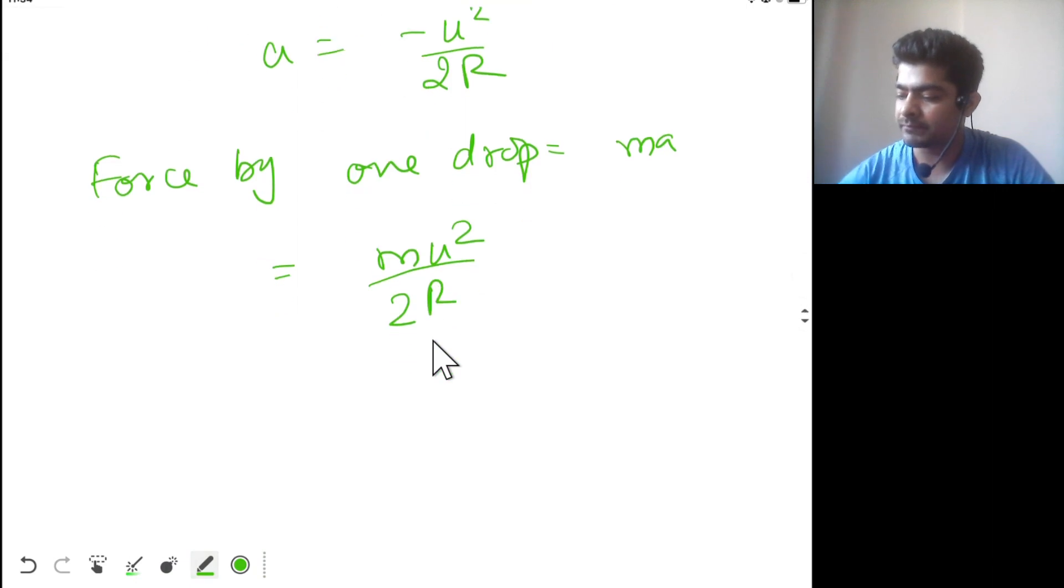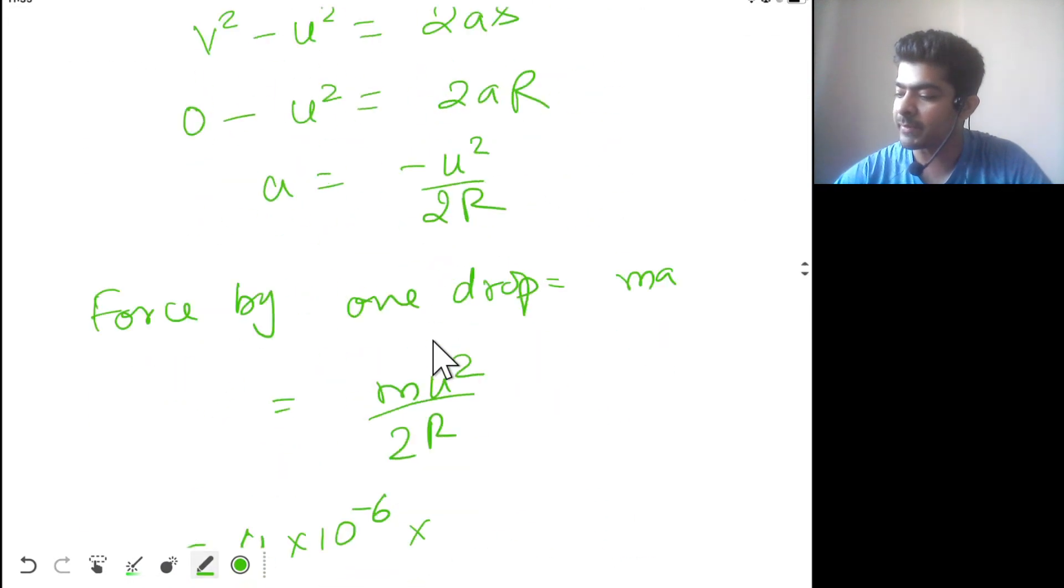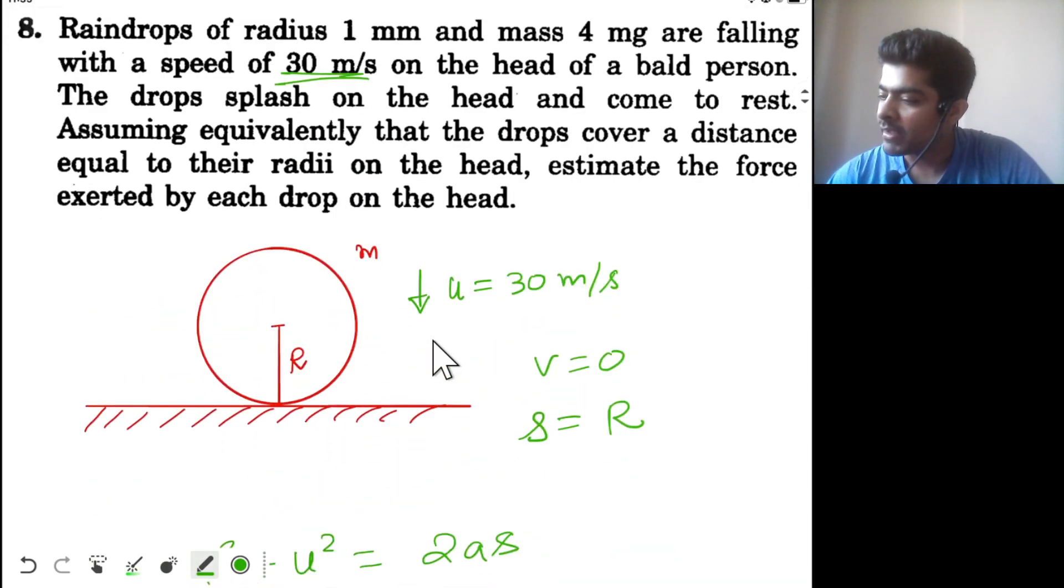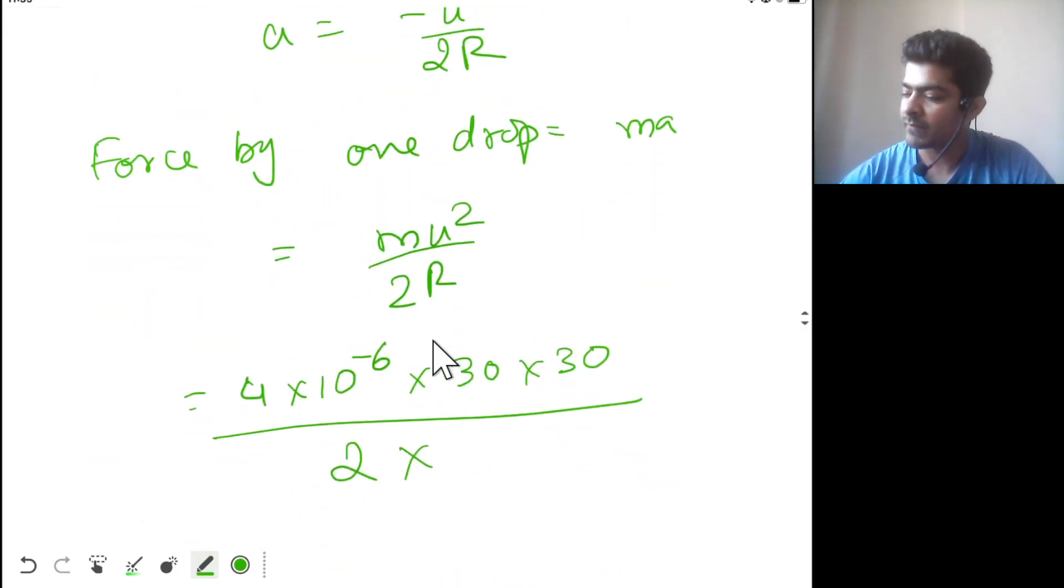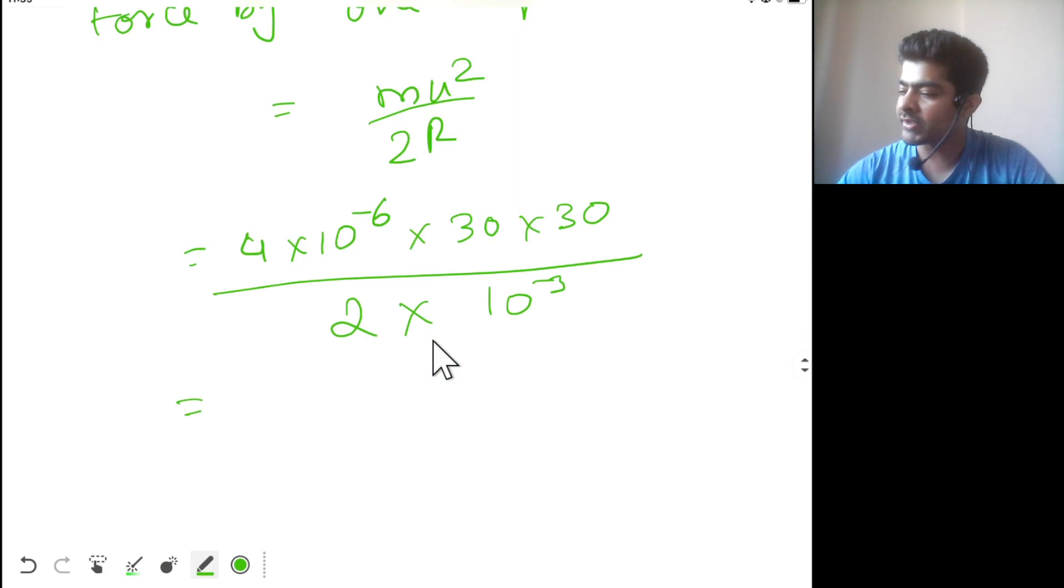Mass of the drop is 4 milligram, so that is 4 into 10 power minus 6 kilogram. u is 30 meter per second, so u squared means 30 into 30 divided by 2 times radius. Radius is given 1 millimeter, so that is 10 power minus 3 meter.